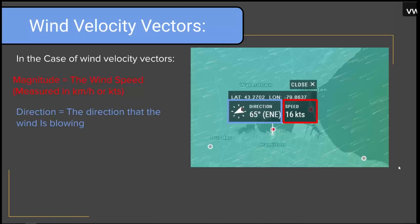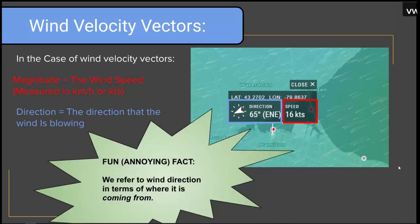Here's a screenshot of SailFlow centered at the Royal Hamilton Yacht Club. We can see an east-northeast wind blowing at 16 knots. An important and annoying fact about wind direction is that we refer to it in terms of where it's coming from. So it's an east-northeast wind because it's coming from the east-northeast — which means our vector arrow is going to point towards the west-southwest.